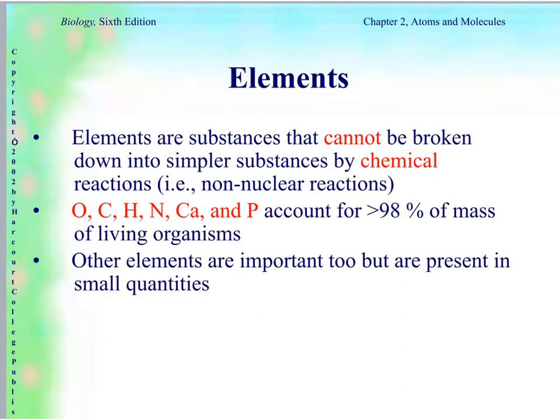Elements are substances that cannot be broken down into simpler substances by chemical reactions. There are six elements that are important for biology, making up over 98% of the mass of living organisms — make sure you know these six: oxygen, carbon, hydrogen, nitrogen, calcium, and phosphorus. If you were going to add one more, that would be sulfur. Other elements are important too, but are present in smaller quantities.